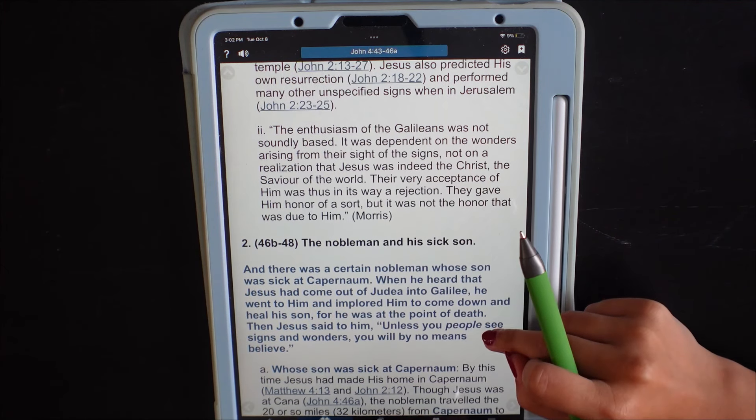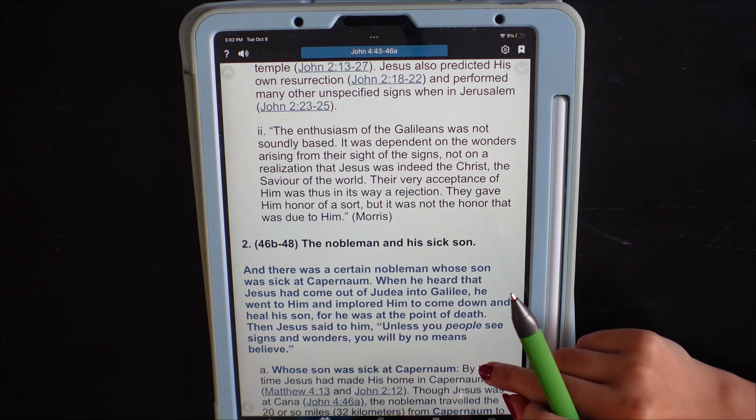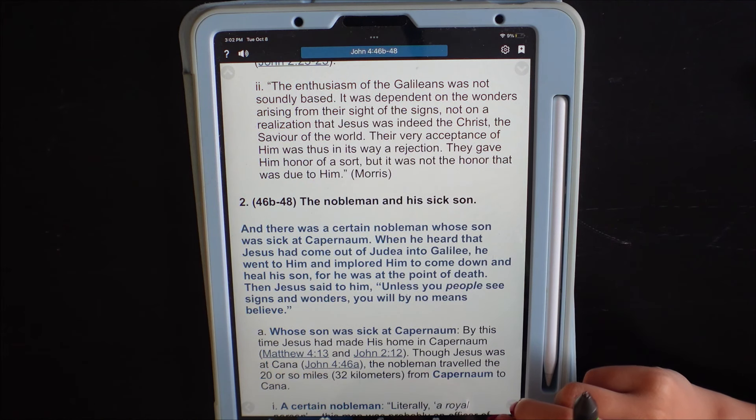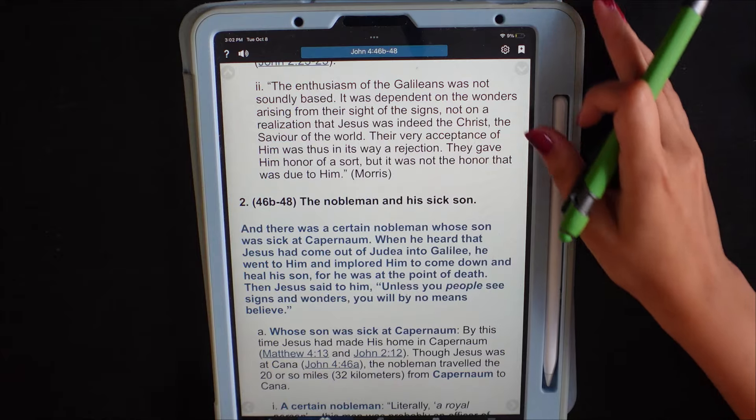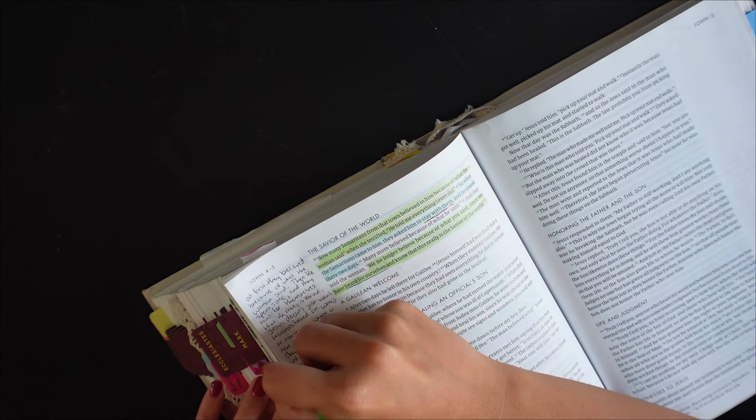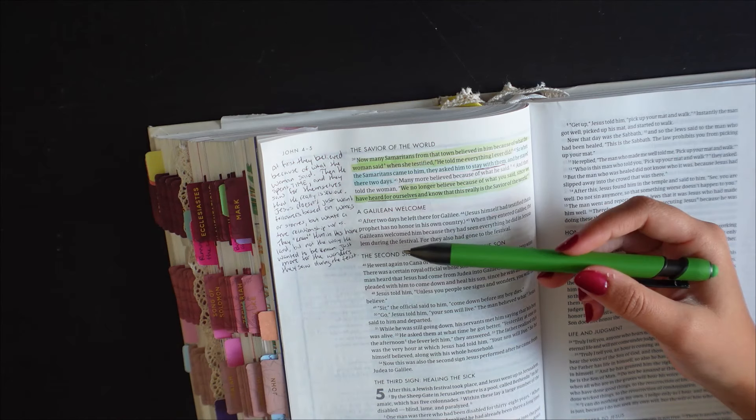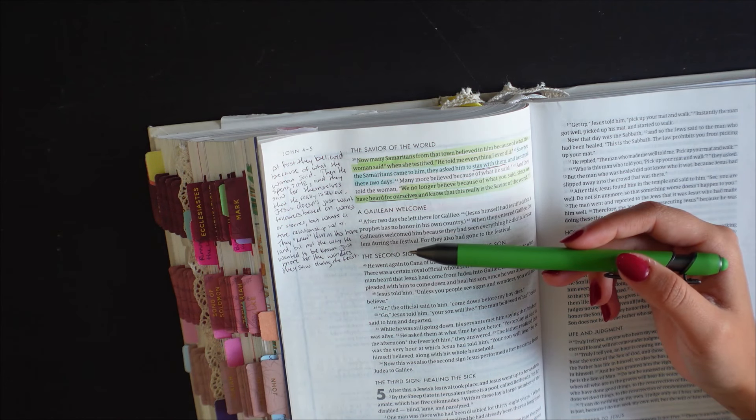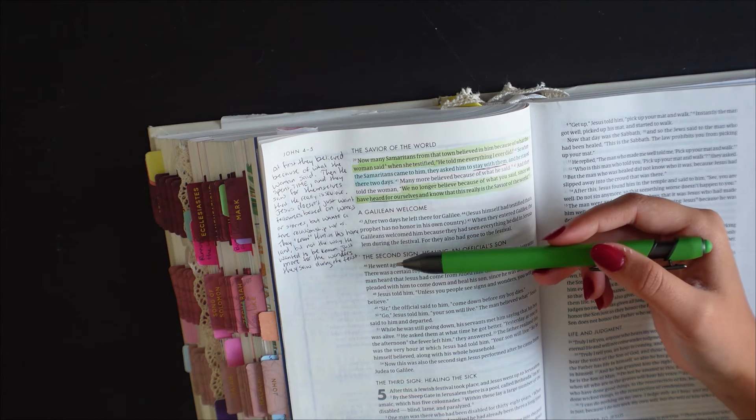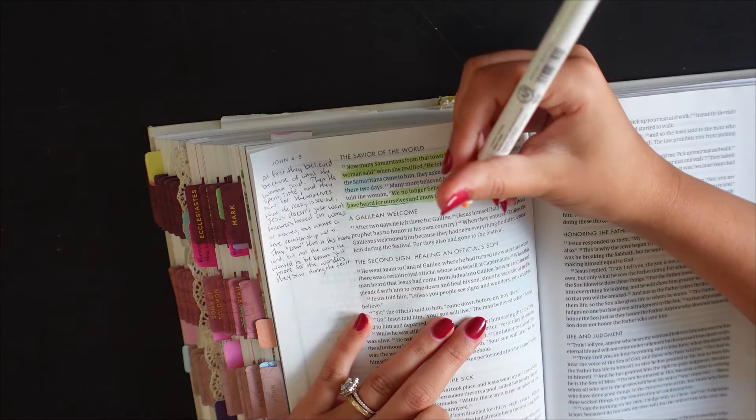The enthusiasm of the Galileans was not soundly based. It was dependent on the wonders arising from their sight of the signs, not on a realization that Jesus was indeed the Christ, the savior of the world. Their very acceptance of him was thus in its way a rejection. They gave him honor of a sort, but it was not the honor that was due to him. And so here I just said, they knew him in his homeland, but not the way he wanted to be known, just more for the wonders they saw during the feast. And now I'm just going to highlight to connect those two ideas.